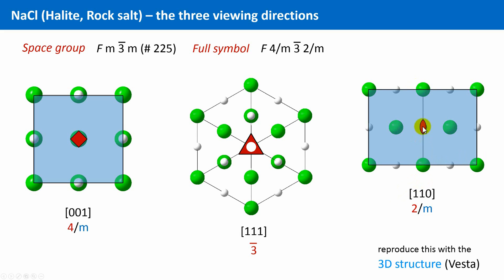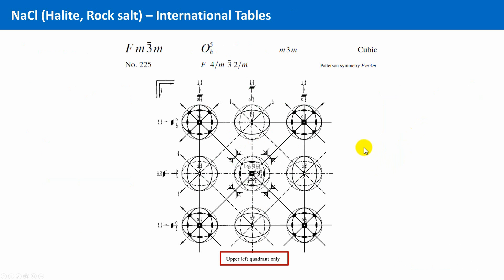And finally, I want to come back to the subtitle of this unit, a simple complicated structure. Up to now, concerning the discussed features, rock salt looks not that complicated. Rather simple. But let's have a look at the international tables of this space group. This is the symmetry element diagram. I find this rather complicated. And note, for reasons of symmetry and clarity, only the upper left quadrant is drawn.